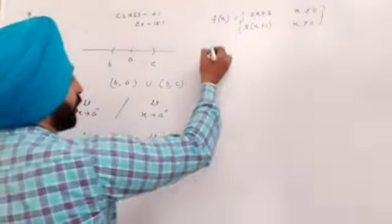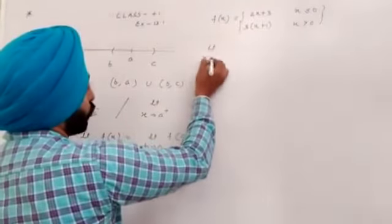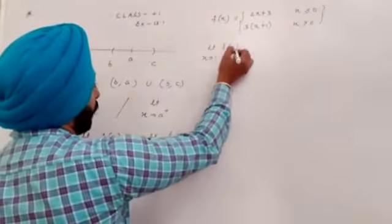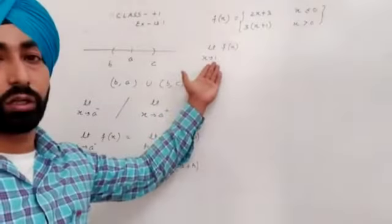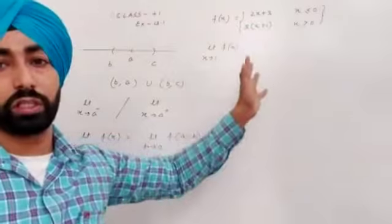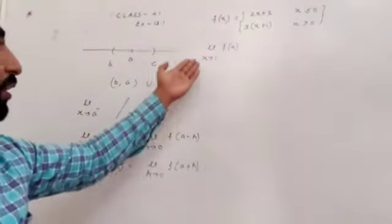And I have to check limit X approaches to 1, f(x). X and breaking point is zero, so I don't need to show the left and right limit.